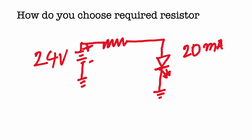Let's see another example where we have a 24-volt battery and we need to draw 20 milliampere of current. What will be the value for R? Using Ohm's Law, V equals IR, so R equals V divided by I.